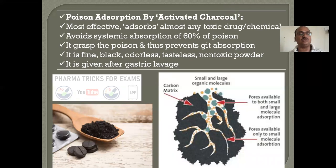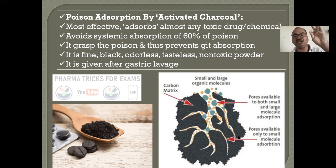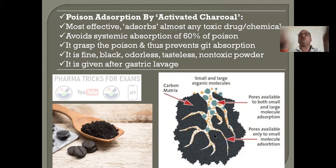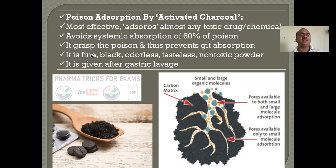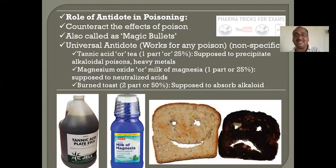Poison adsorption by activated charcoal — this is a charcoal powder. If you see the particle of charcoal, it consists of pores — a large number of pores — so the surface area is very high. The poison will enter into the charcoal pores. Once you give charcoal powder, the entire poison will be adsorbed onto the charcoal. Then you do emesis, and the poison along with the charcoal will come out. It adsorbs almost all drugs — it avoids 60% of the poison absorption. It grasps the poison and prevents GIT absorption. It is a fine, black, odorless, tasteless, non-toxic powder, given after gastric lavage.